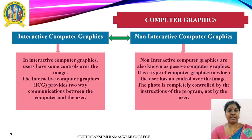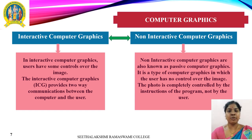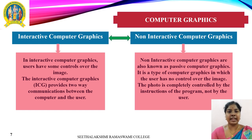Interactive computer graphics (ICG) allows users to have control over the image — the user can make any changes to the image produced. ICG provides two-way communication between the computer and the user. Using ICG systems, integrated electronic circuits which are very complex can be drawn in much shorter time. There are many tasks that can be made easier and less expensive through the use of ICG. The effectiveness of ICG lies in the speed with which the user can interact with the displayed information.